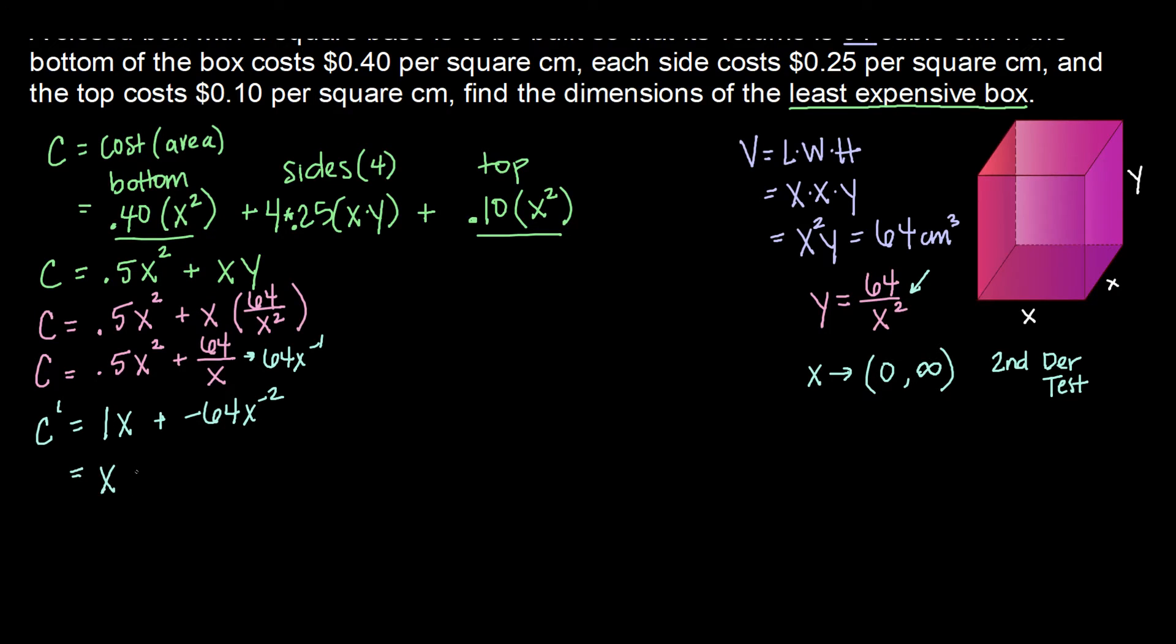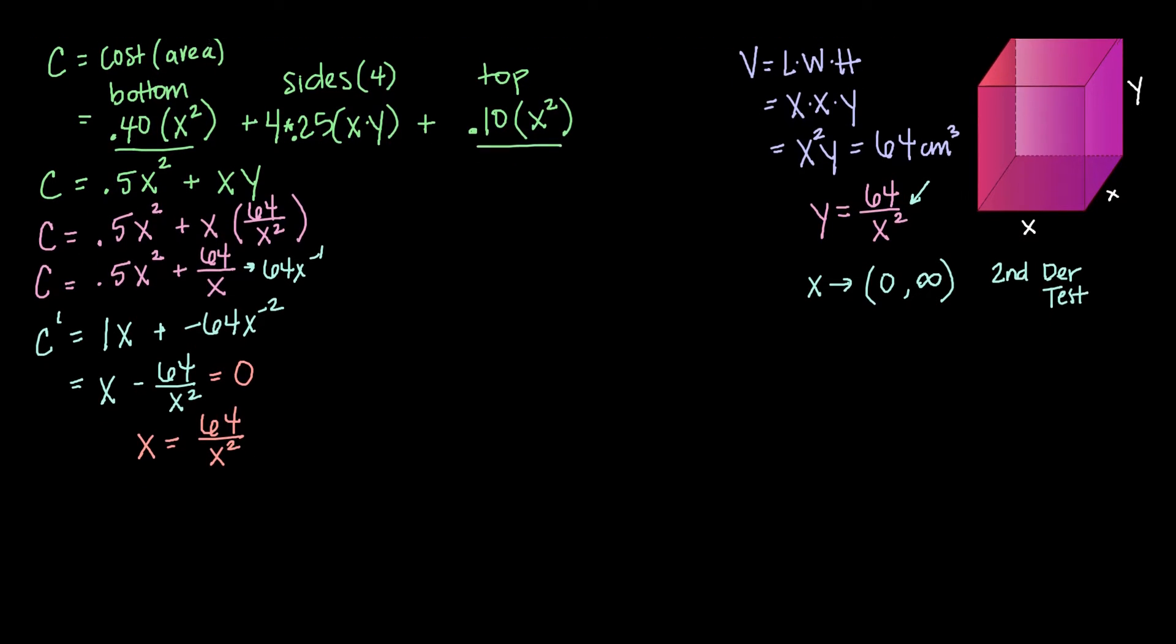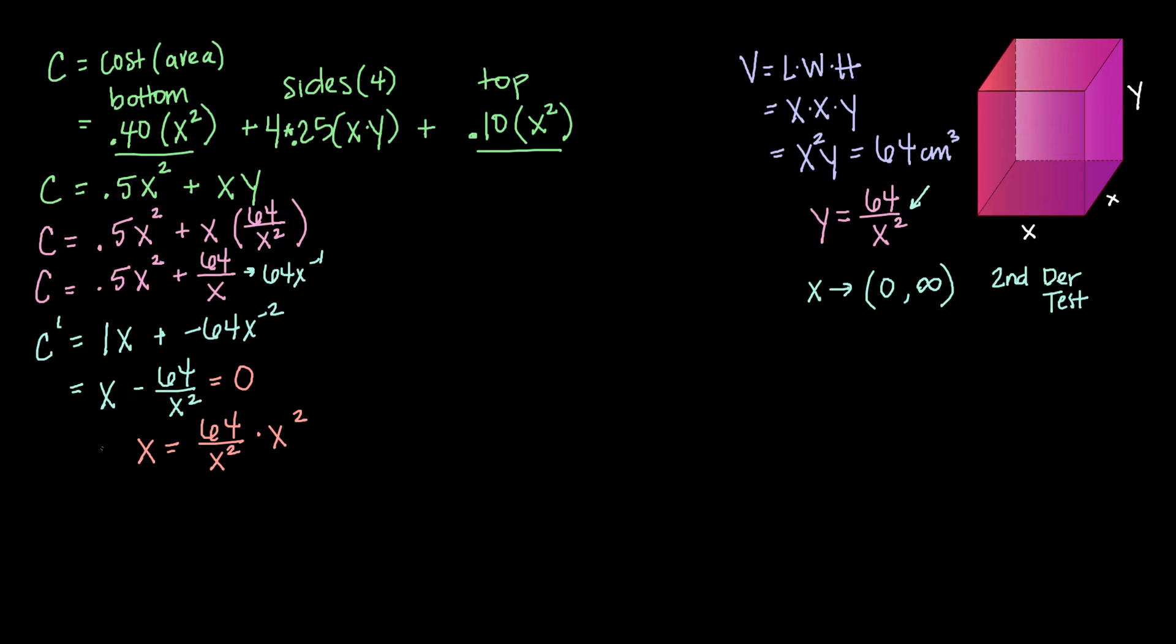So that would be x minus 64 over x squared. Now we're interested in where this is equal to 0. So solving for x here, we get x equals 64 over x squared. Multiplying both sides by x squared gives me x cubed equals 64. And then taking the cube root here, I get x equals 4. So our critical point is x equals 4.